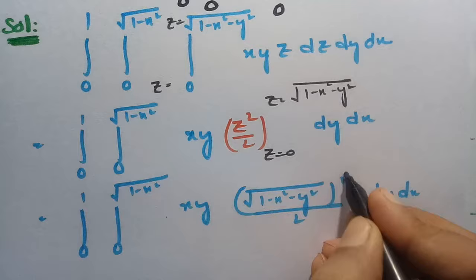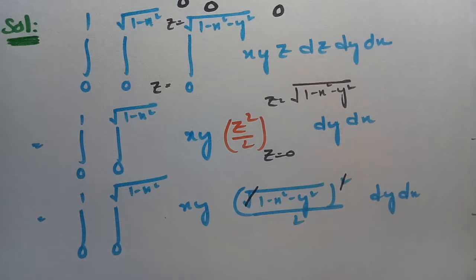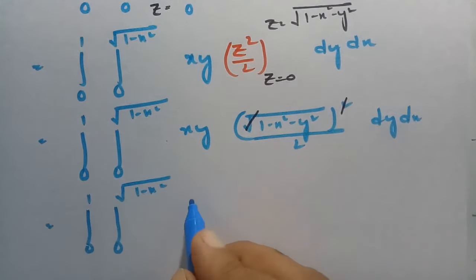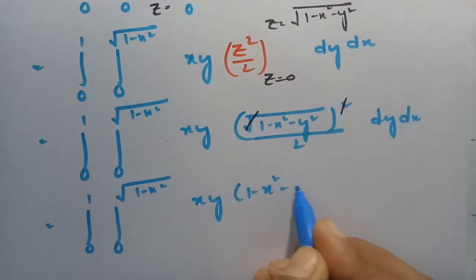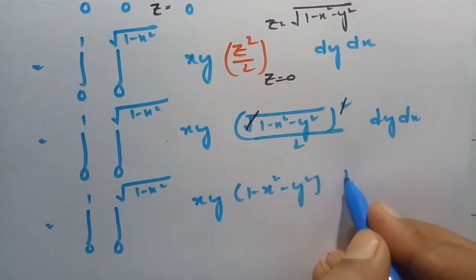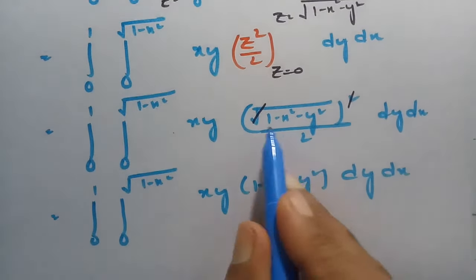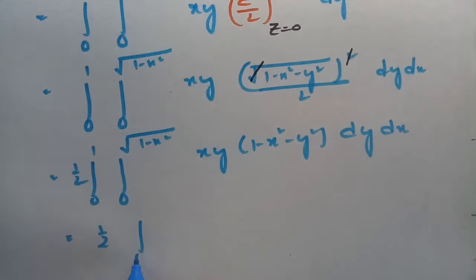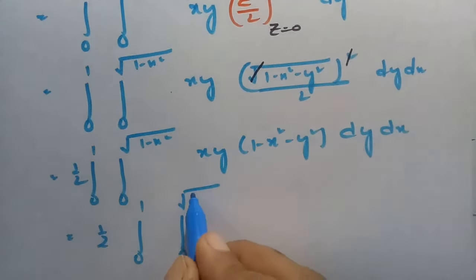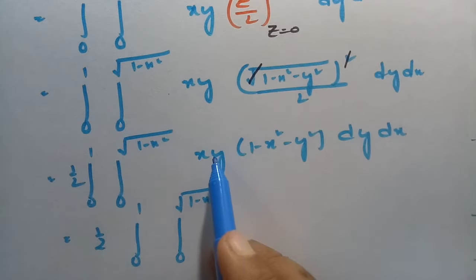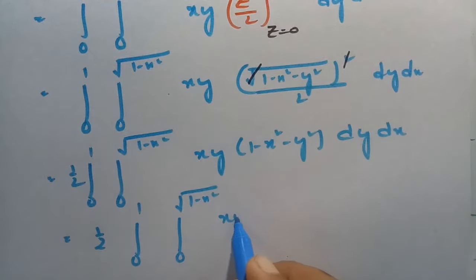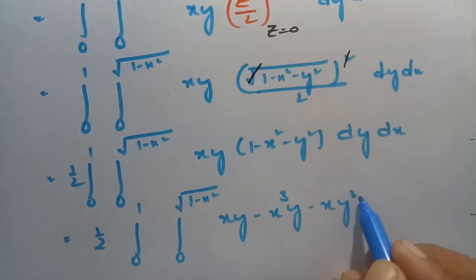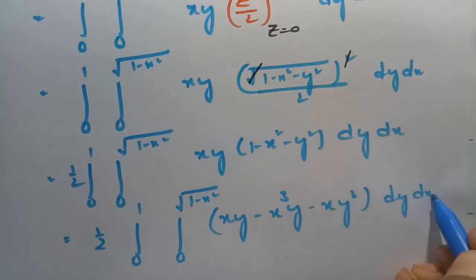Now cancelling the square and the root, this becomes (1/2) times integral from 0 to 1, integral from 0 to √(1−x²) of xy·(1−x²−y²) dy dx. Expanding by multiplying through: xy − x³y − xy³, and keeping the (1/2) factor outside.